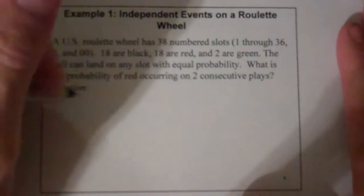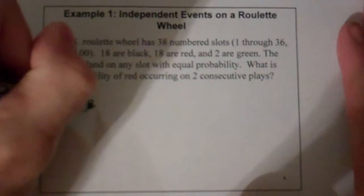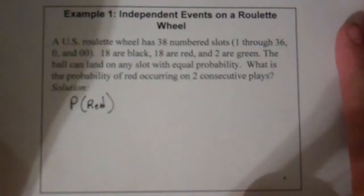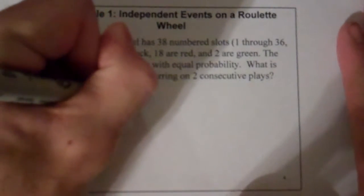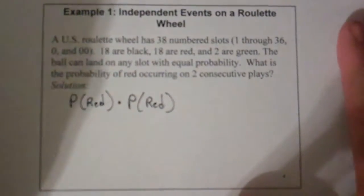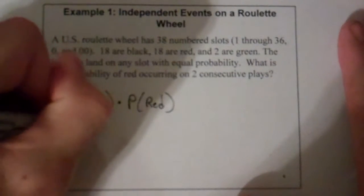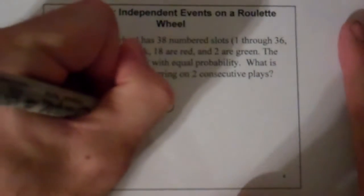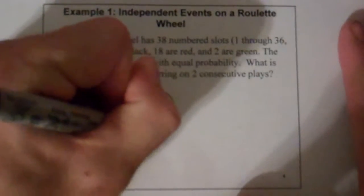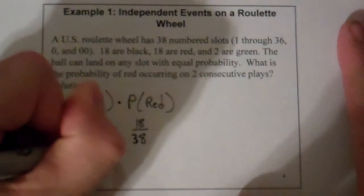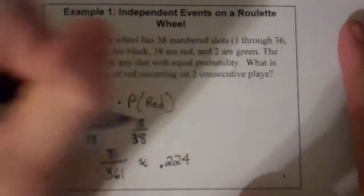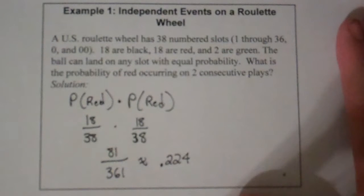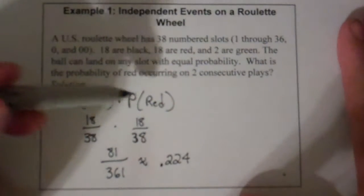The probability of a red occurring — and then you pick the ball up and spin it again. The ball has no memory of what it did last time, so this is going to be an independent event. We're going to multiply the probability of another red coming up. There are 18 reds out of 38 total, so we multiply 18/38 by 18/38. That gives us 81/361, which as a percent is about .224. So you only have about a 1 in 4 chance of two reds coming up in a row.